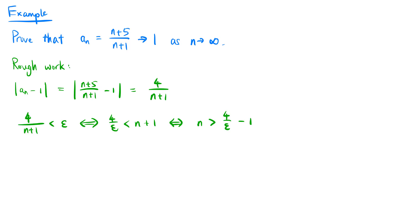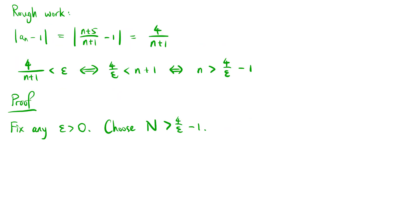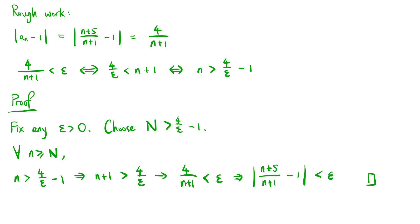Now we solve the inequality 4 over (n plus 1) less than epsilon. This is equivalent to 4 over epsilon less than n plus 1, which is equivalent to n greater than 4 over epsilon minus 1. So we can choose capital N greater than this value. We fix any epsilon greater than 0 and choose N greater than 4 over epsilon minus 1. For all little n greater than or equal to N, n greater than 4 over epsilon minus 1 implies n plus 1 greater than 4 over epsilon, which implies 4 over (n plus 1) less than epsilon, which implies the absolute value of (n plus 5) over (n plus 1) minus 1 is less than epsilon. This completes the proof.